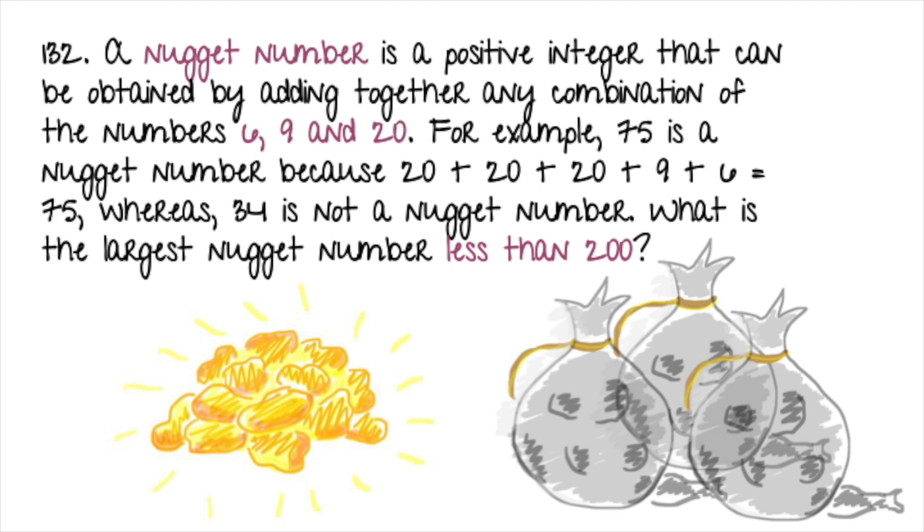For example, 75 is a nugget number because 20 plus 20 plus 20 plus 9 plus 6 equals 75, whereas 34 is not a nugget number. What is the largest nugget number less than 200?